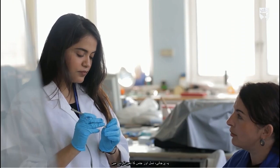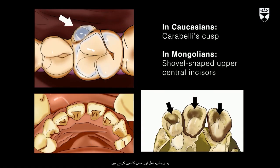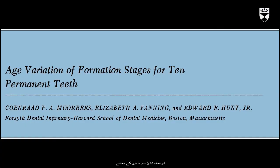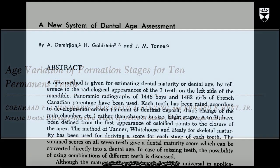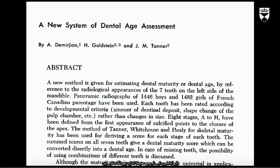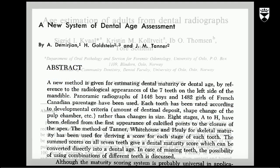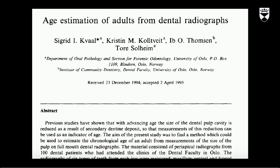They are also able to determine the species, gender, and race through teeth. Forensic odontologists also estimate the age of people by examining the dentition and assessing radiographs by applying different methodologies and literature.